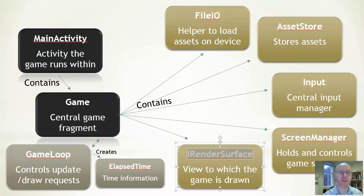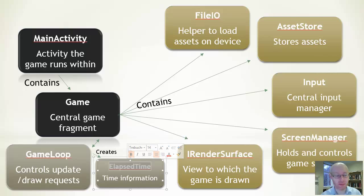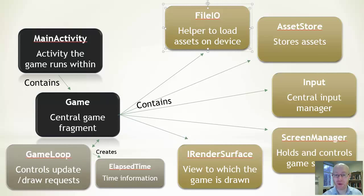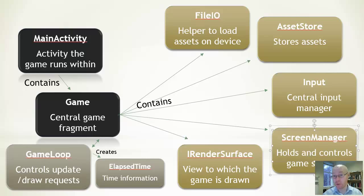We also have a renderable surface — an interface for the view we draw our game to — and elapsed times, which the game loop produces to tell us how much time has elapsed since the last update or draw. This assumes a single activity linked to a single fragment containing a single view, with lots of other managers at that level. Game objects just need access to the Game fragment and all services are available to them.